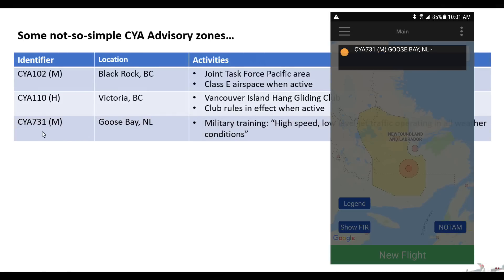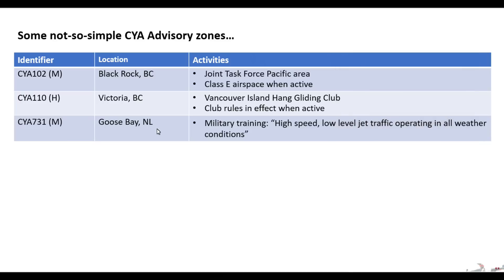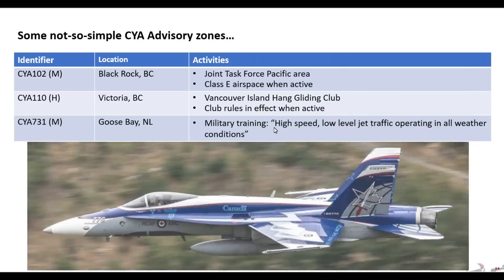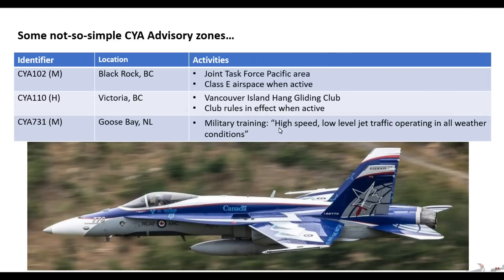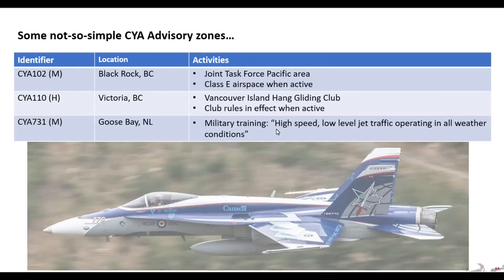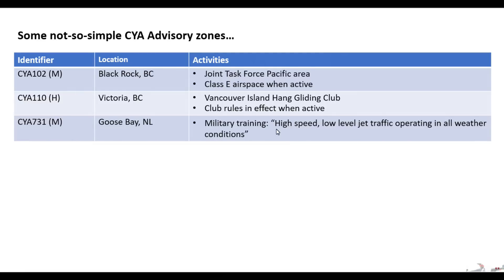The biggest one is CYA 731, near Goose Bay, Newfoundland. It's absolutely enormous as you can see from the map, and it's a military training zone. The DAH notes high-speed, low-level jet traffic operating in all weather conditions. Once again, probably not a great spot to fly your drone. If you do live around there or want to drone there for whatever reason, I strongly recommend you call those guys up before you do so.